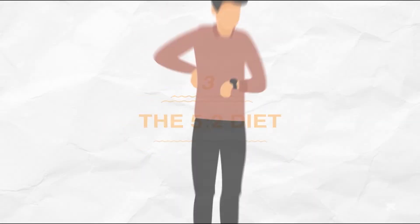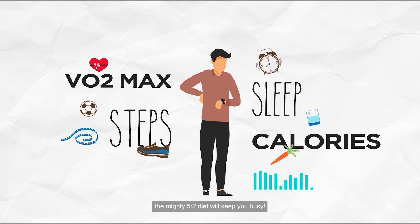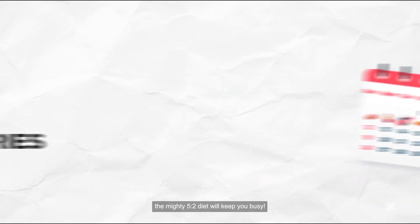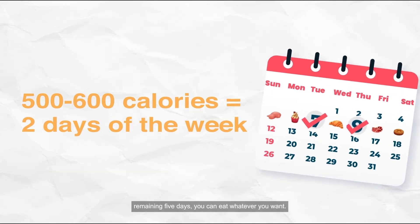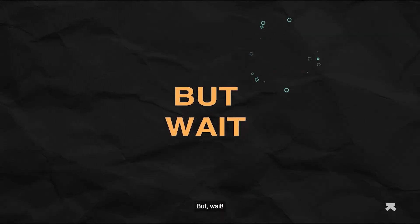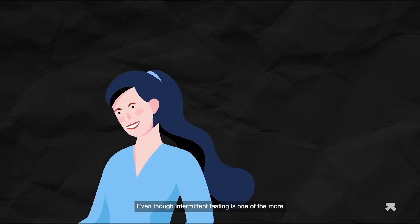Last but not least: the 5:2 diet. If habit tracking is your jam, the mighty 5:2 diet will keep you busy. You eat 500 to 600 calories on two non-consecutive days of the week (like a Tuesday and Thursday), and for the remaining five days, you can eat whatever you want - no calories barred.